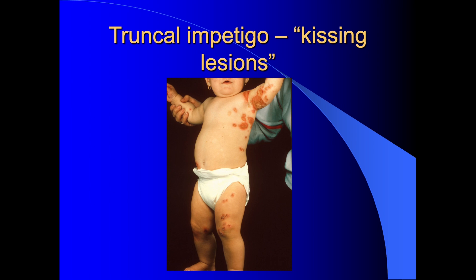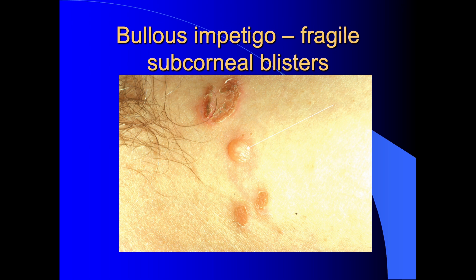Some strains of Staphylococcus aureus produce a toxin called the epidermolytic toxin, which produces superficial separation within the epidermis, creating superficial friable blisters. In the centre of this frame you can see a blister; other blisters have ruptured producing honey-coloured crusting. This is called bullous impetigo.